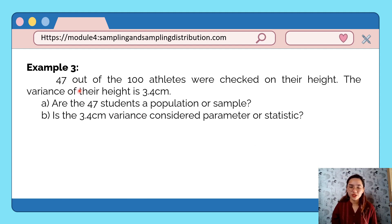Example number 3: 47 out of 100 athletes were checked on their height. The variance of their height is 3.4 cm². Are the 47 students a population or sample? Of course, that is a sample - it's only a portion of the whole population of 100. The 3.4 cm variance is of course considered a statistic because the data describes our 47 athletes.